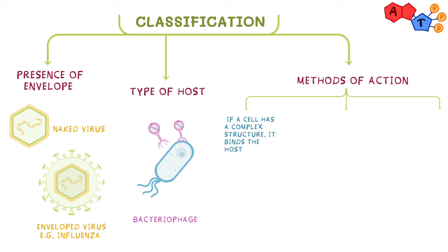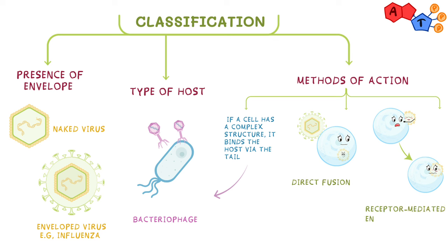If a virus has a complex structure with head and tail morphology, it can bind to the host via the tail and inject its genetic material into the cell like a needle — most commonly seen in bacteriophages. If a virus is enveloped, the lipid bilayer can fuse with the cell membrane of the host and infiltrate the cell; this is known as direct fusion. If a virus is naked or even enveloped, it can enter through receptor-mediated endocytosis — receptors often can't tell it's a viral particle and welcome it in. The last two methods are most commonly seen in eukaryotic cells.